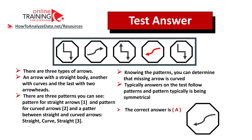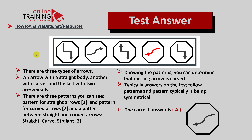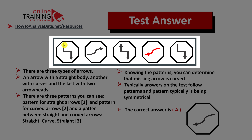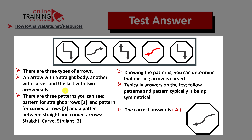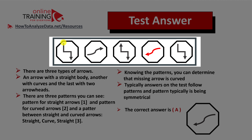Let me explain how you can come up with the solution on your own. What we see here is three types of arrows: an arrow with a straight body, another arrow with a curved body, and an arrow with two arrowheads. My recommendation is always look for patterns. You see that shapes 1, 3, and 5 are straight arrows, and shapes 2 and 4 contain curved arrows.